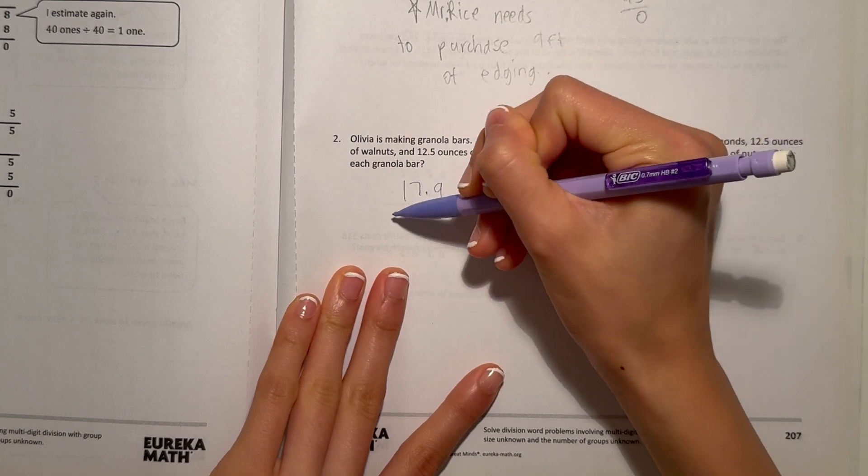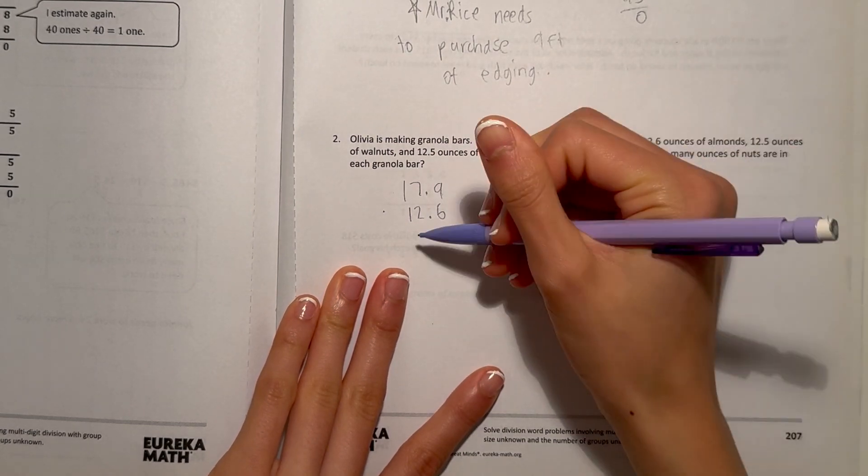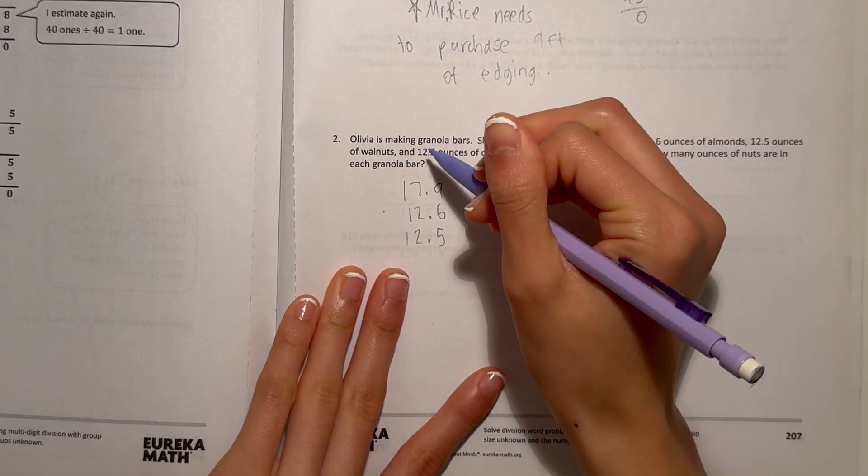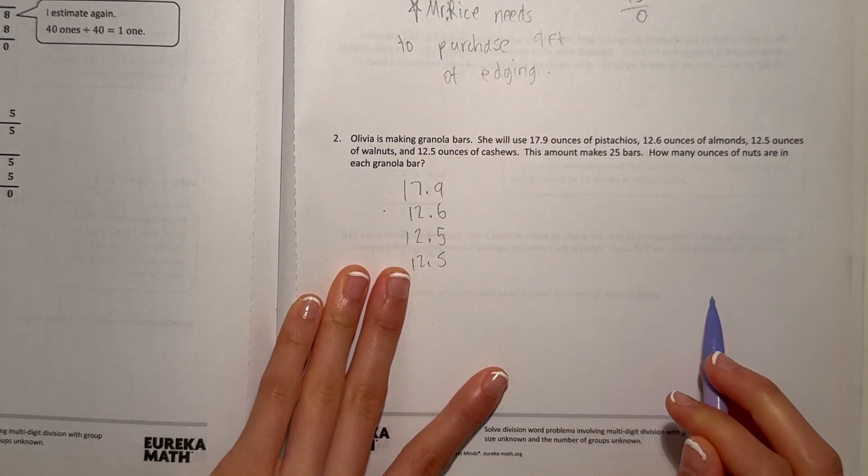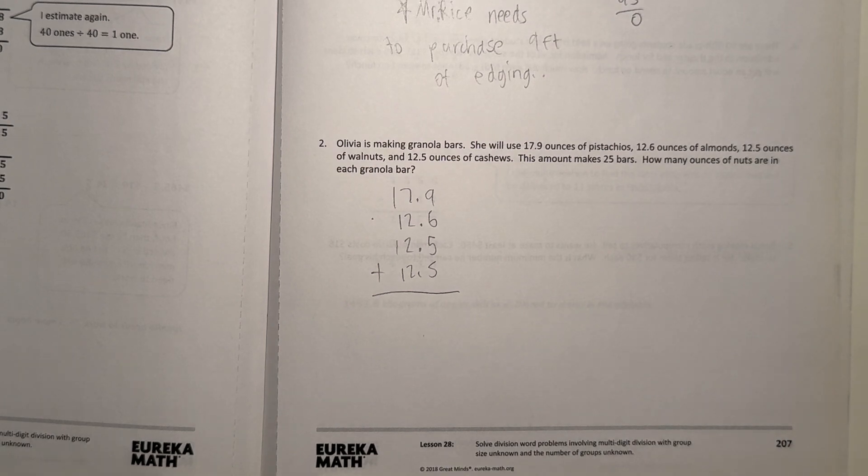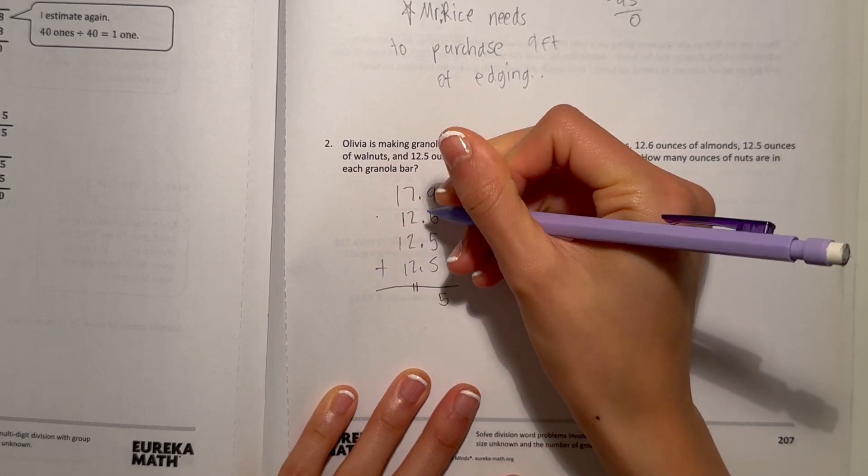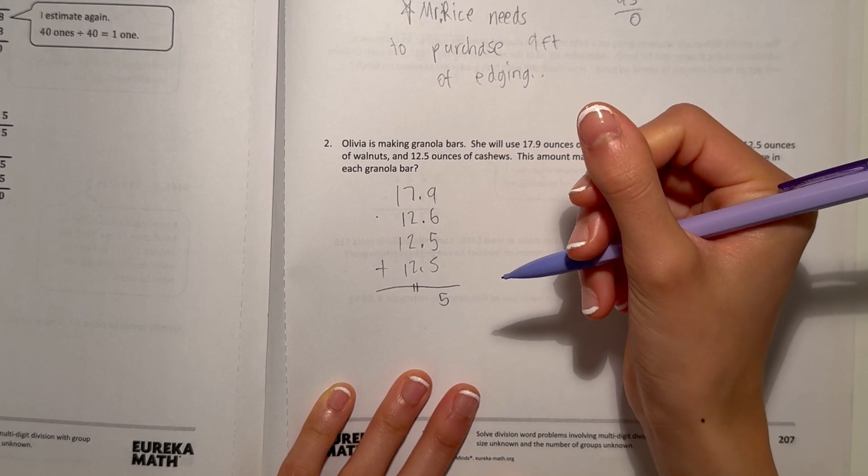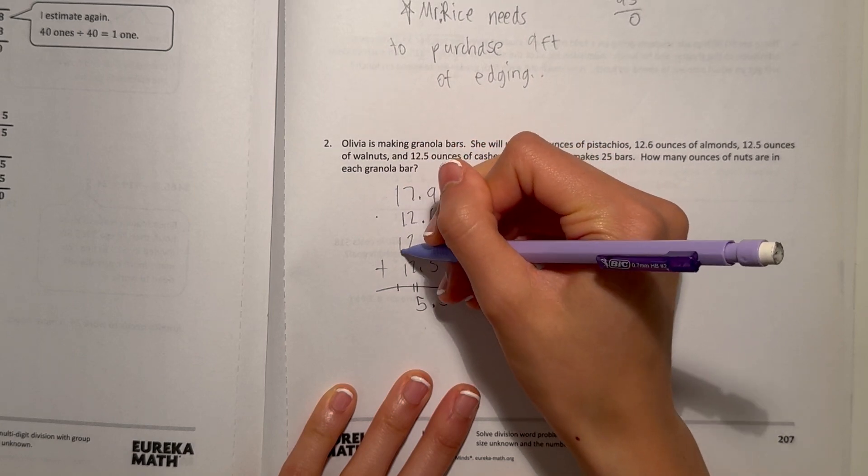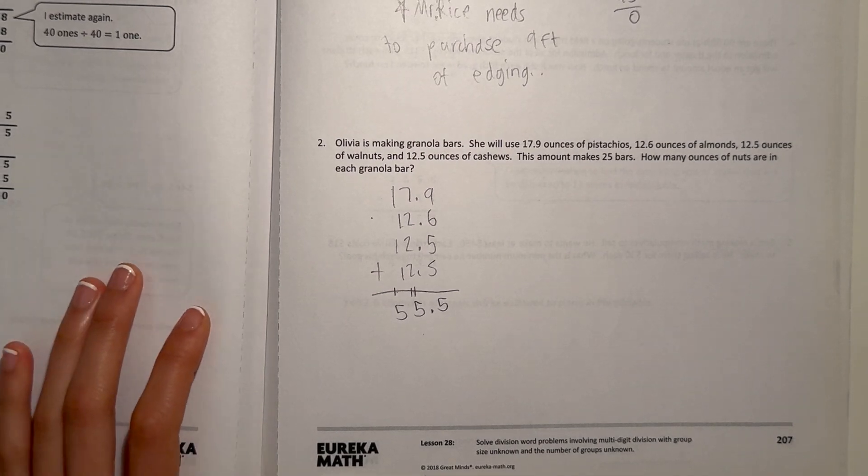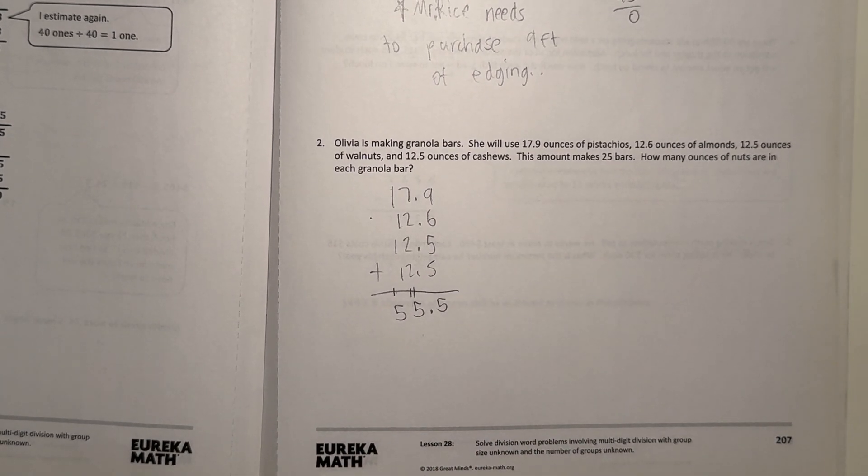We have 17.9 plus 12.6 plus 12.5 plus another 12.5. Add that all together: 9 plus 6 is 15, plus 5 is 20, plus 5 is 25. Carry over. 7 plus 2 is 9, plus 2 is 11, plus 2 is 13, plus 2 is 15. That's 55.5 ounces of nuts she used in all.